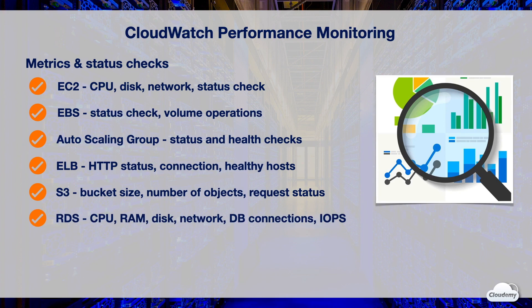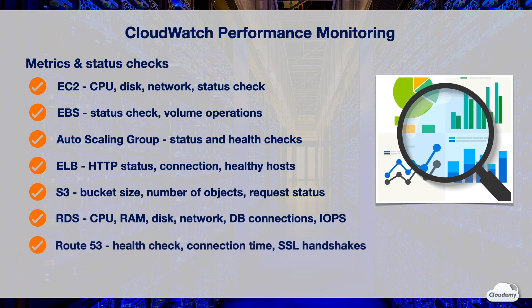CloudWatch can monitor the performance of RDS databases such as CPU utilization, disk space, RAM consumption, network traffic, database connections and IOPS. CloudWatch can also check Route 53 health status such as connection time and SSL handshakes, so that Route 53 can automatically fail over or direct traffic to different routes.